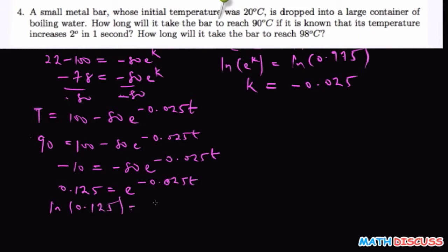equals the natural logarithm of this, which is going to give us negative 0.025t. So therefore t is going to be